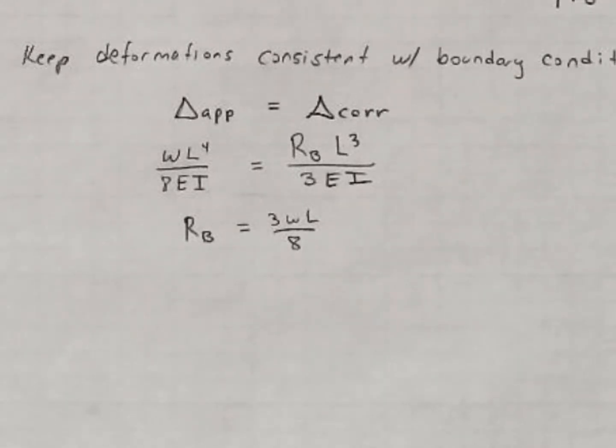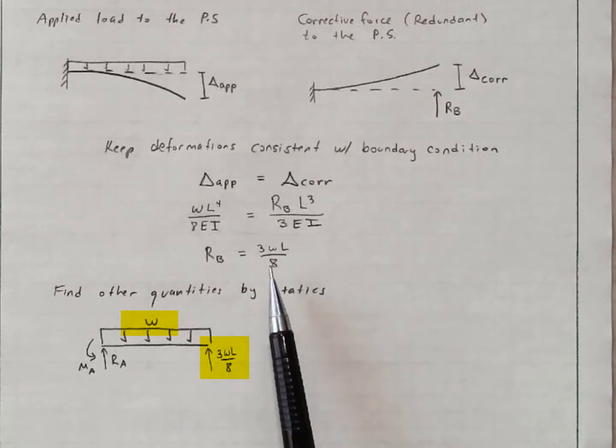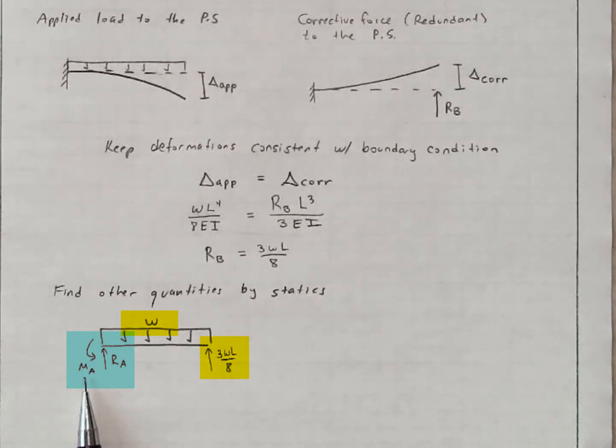After this, we're going to use statics to find the rest of the information. What I'm showing here is a free body diagram that represents the quantities that we know so far and what we have yet to determine. We know the distributed load W. We now know this force at the right side, 3WL over 8. I just calculated it by going through this whole process.